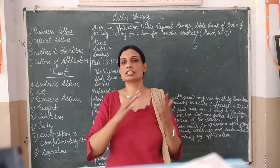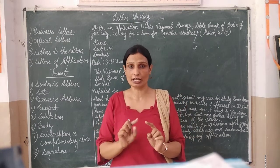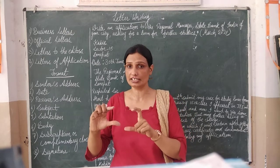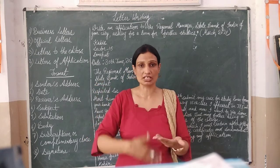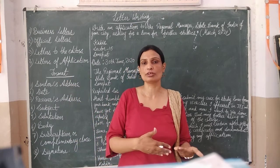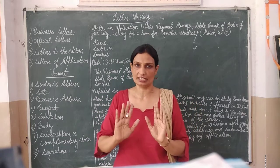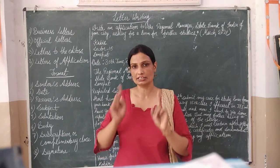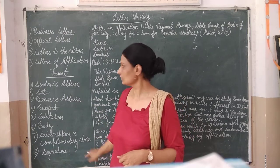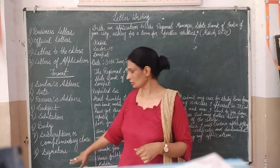The 7th point is the subscription or complimentary clause. You write 'Yours sincerely' or 'Yours truly.' If writing to family, you can write something personal. In an application, you write 'Yours obediently.' The last point is the signature — it is a must. Don't forget it: write your full name and then your signature. So all 8 points are: sender's address, date, receiver's address, subject, salutation, body, subscription or complimentary clause, and signature.